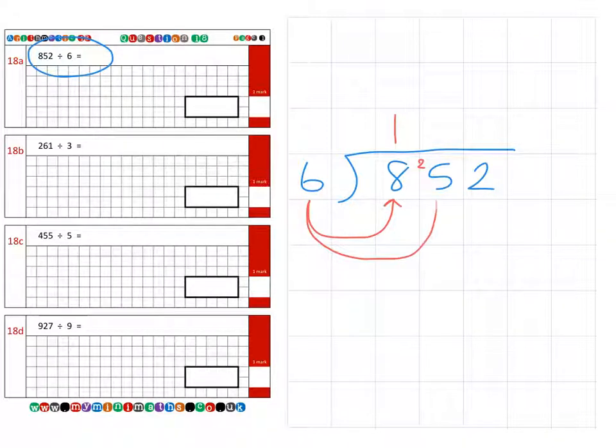Then how many sixes can we fit into 25? That's four because four sixes are 24, so that leaves one to carry over to the units column. Finally, how many sixes into 12? That's two, so we have a final answer of 142.